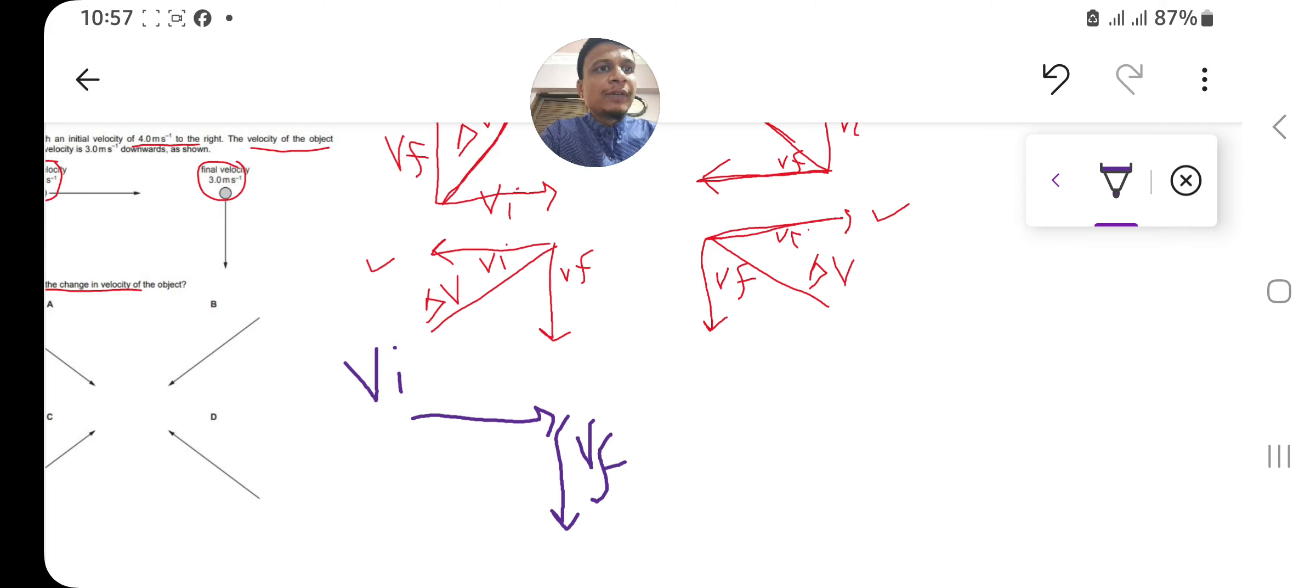the change in velocity is Vf minus Vi. If this is positive Vi, we will change this to negative Vi. This negative Vi and Vf—it will remain the same, this is positive, it is Vf.